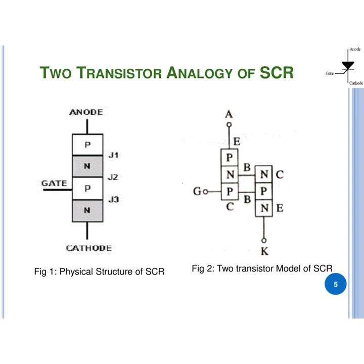It has one PNP transistor and one NPN transistor. The base of the PNP transistor is connected to the collector terminal of the NPN transistor, while the base of the NPN transistor is connected to the collector of the PNP transistor. By connecting such a configuration we get the 2-transistor model of SCR, which is shown in figure number 2.